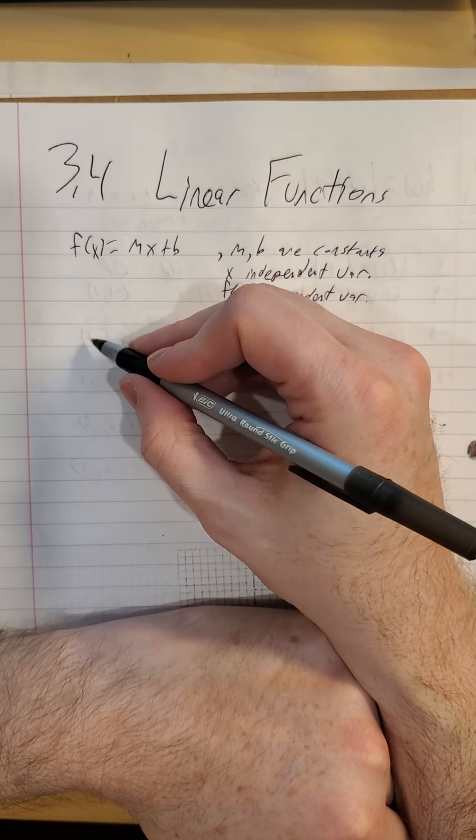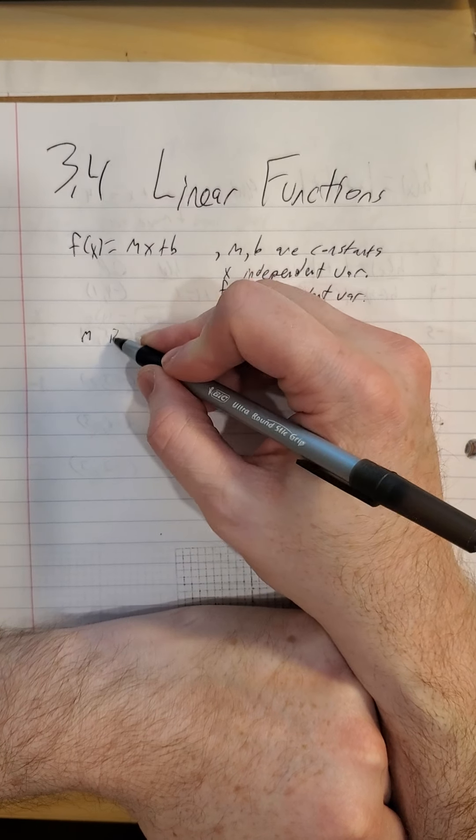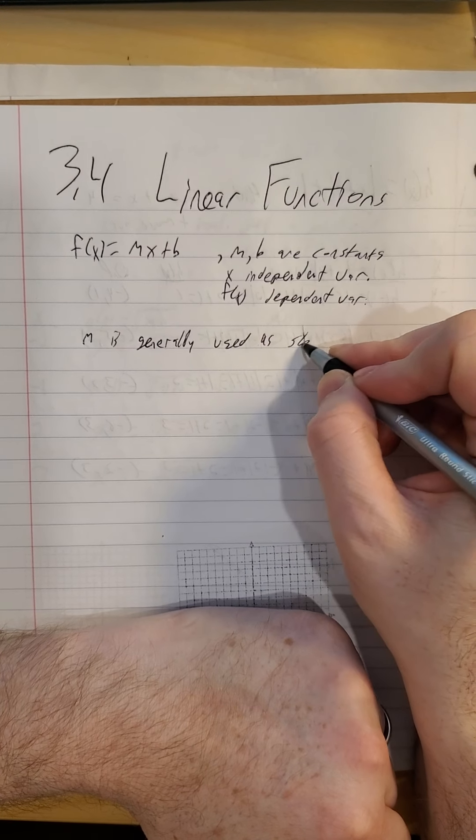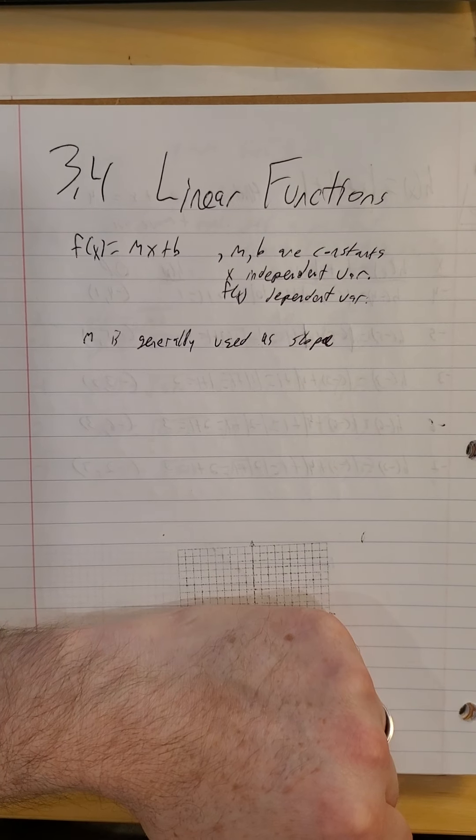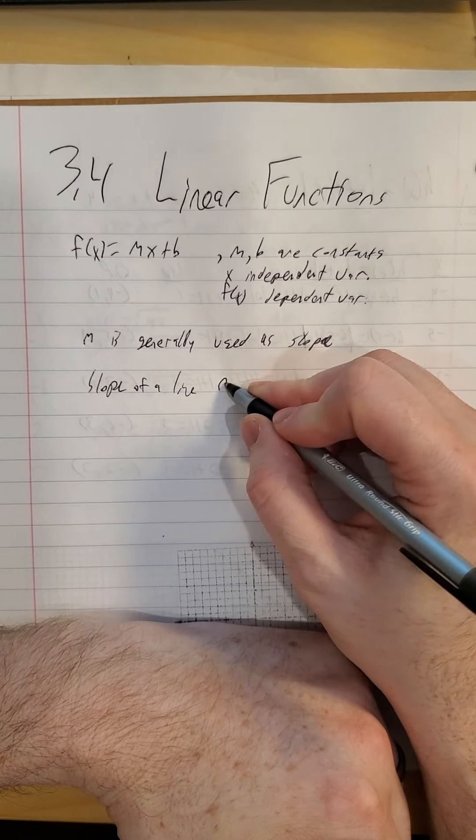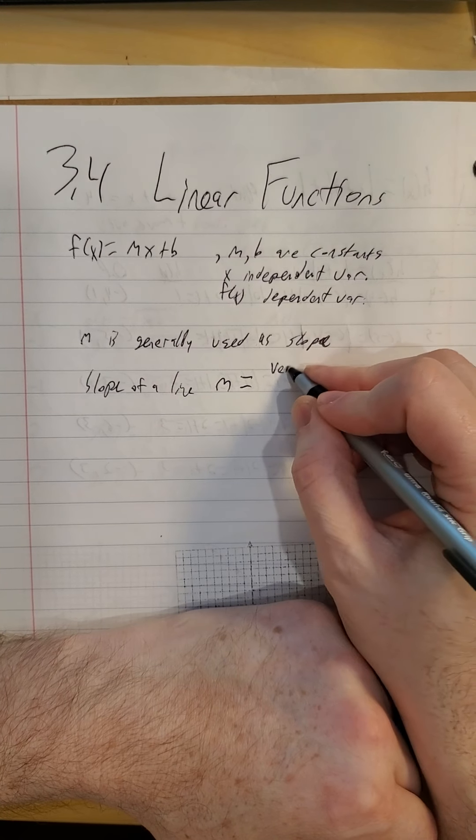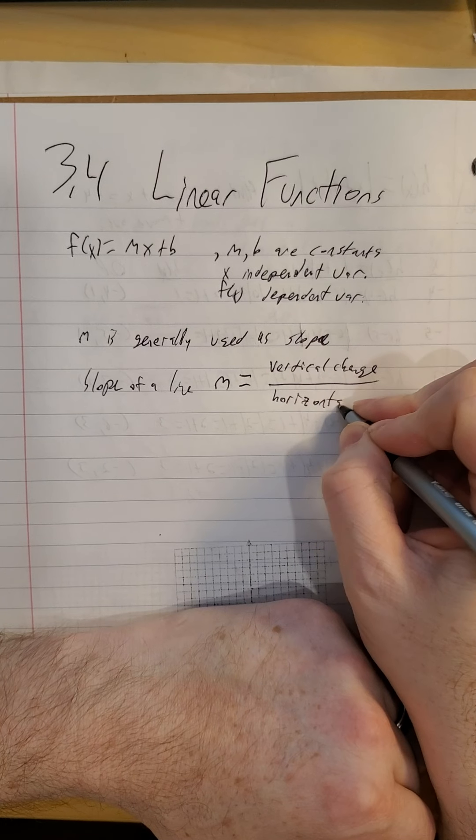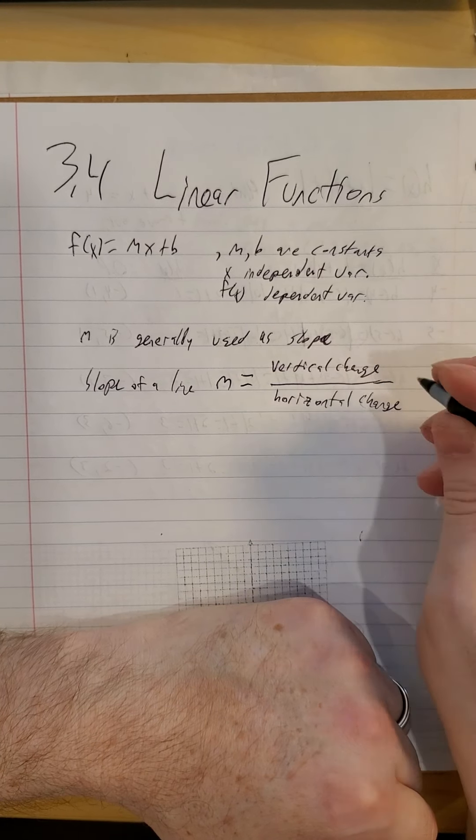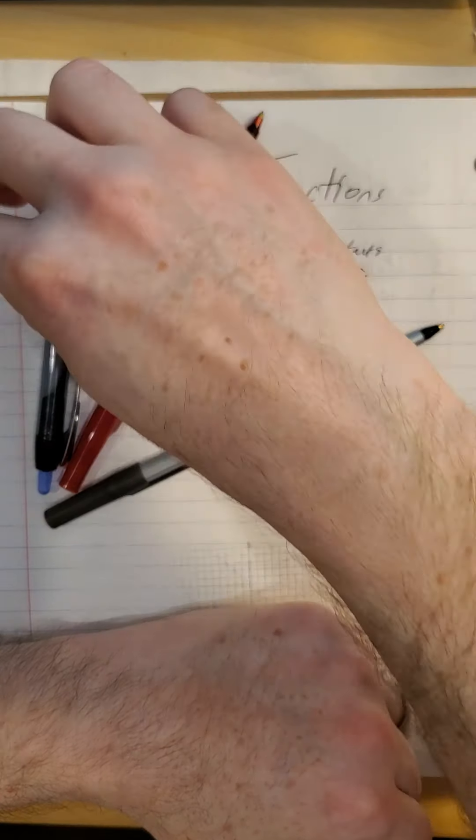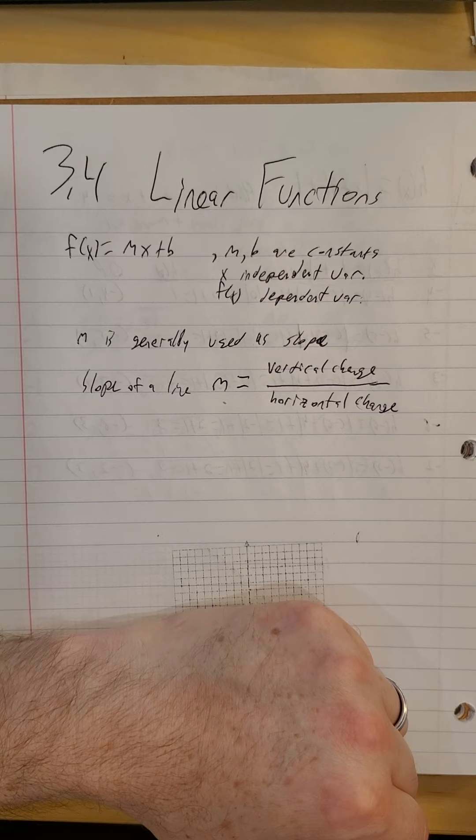So one other thing that we would look at here, M is generally used as slope. So the slope of a line, which is again represented by the letter M, vertical change to horizontal change. In other words it's measuring how steep of a line you're working with, is your line this steep, is it this steep, is it almost vertical. How much vertical change is there for every unit of horizontal change?